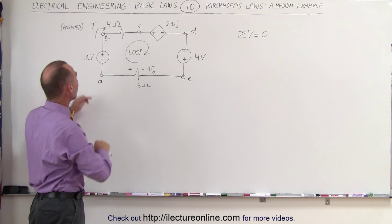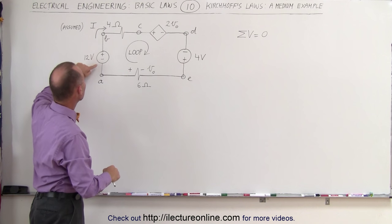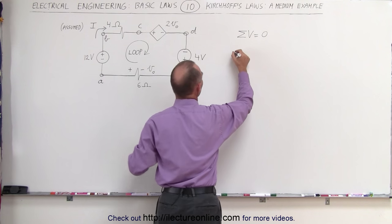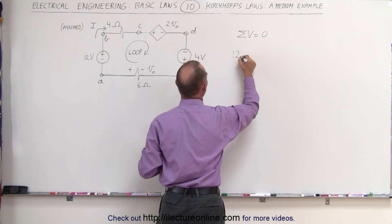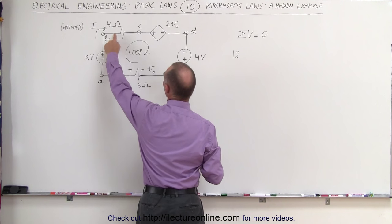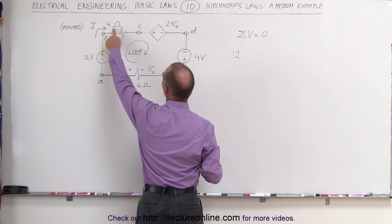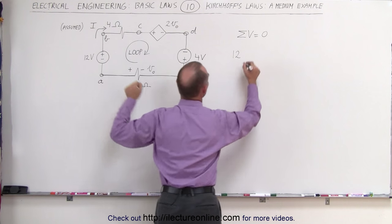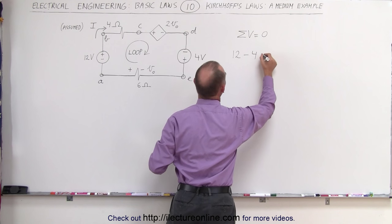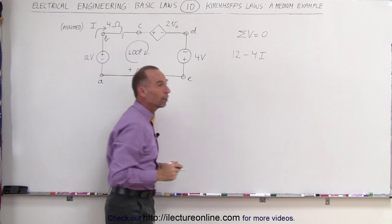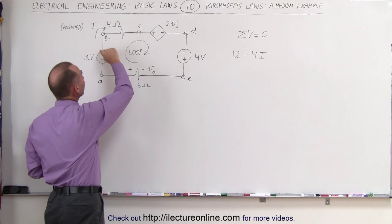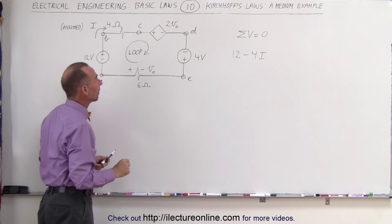Alright, let's go ahead and sum up all the voltages. Going from A to B, we cross the 12 volt battery. From the negative end to the positive end, that's a 12 volt rise. Now we go across the resistor. 4 ohms times the current, that would be a minus 4 times I voltage drop. Whenever we cross the resistor in the direction of the assumed current, we assume a voltage drop.